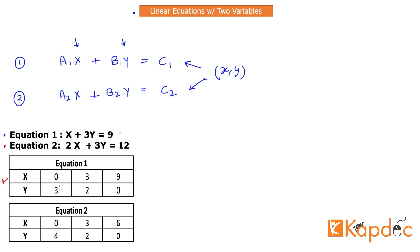Whenever you put x equal to 0 and y equal to 3 in Equation 1, you will obtain a result of 9. If you put x equal to 3 and y equal to 2 in this equation, you will get 9 as well. In other words, these three different pairs of values of x and y are three different solutions for Equation 1. Similarly, for Equation 2, you can find a variety of pairs of values of x and y that will satisfy it, and those pairs are stated right here.